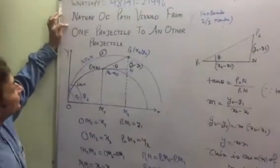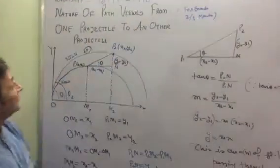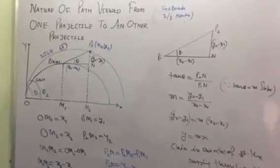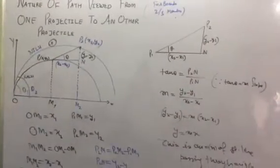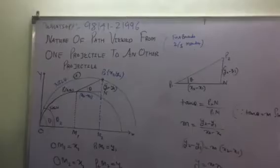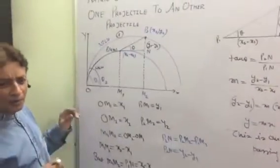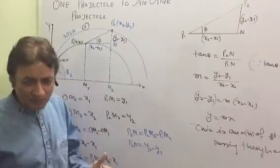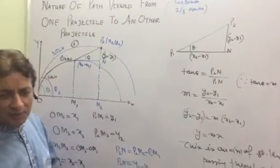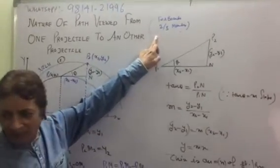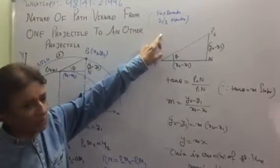Nature of path viewed from one projectile to another projectile. Students, this is a very important question for CBSE board exam and state board exams. Generally, this question appears in exams worth two or three marks.